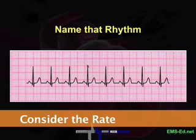Any rhythm greater than 100 is considered tachycardia — sinus, junctional, ventricular. Any pacemaker cells firing faster than 100 is tachy. So that's the rate.